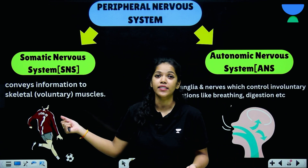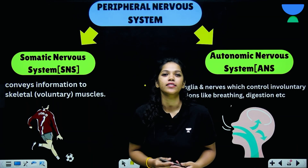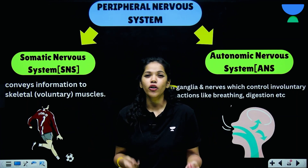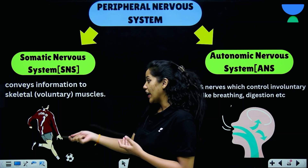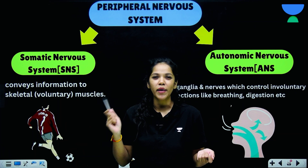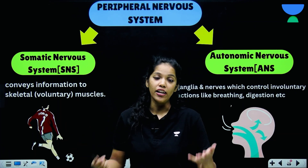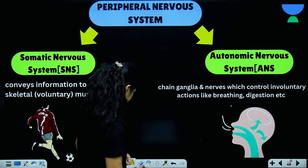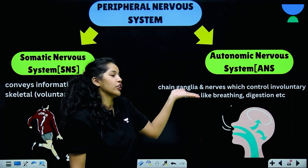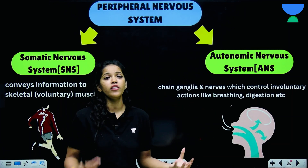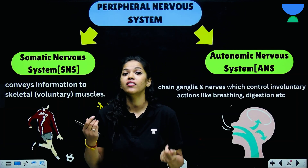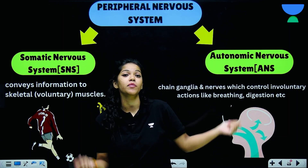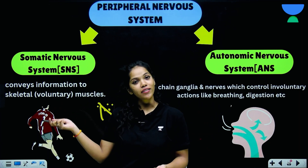The peripheral nervous system is further divided into your somatic nervous system and your autonomic nervous system. Your somatic nervous system conveys messages from your central nervous system to your skeletal and voluntary muscles. It is responsible for any voluntary action — like Ronaldo kicking a football. Your autonomic nervous system comprises a chain of ganglia and nerves which control involuntary actions like breathing and digestion.